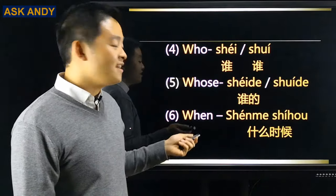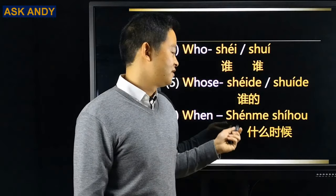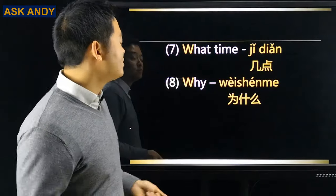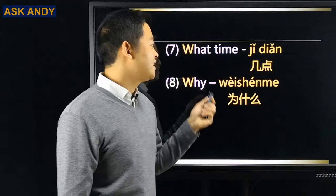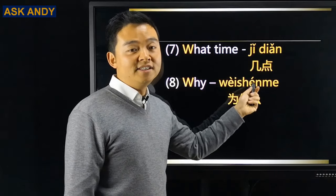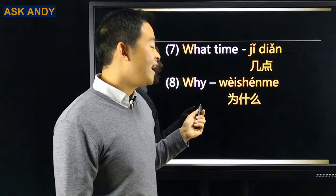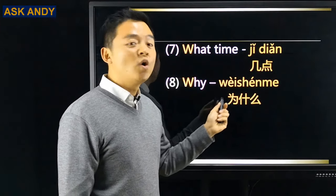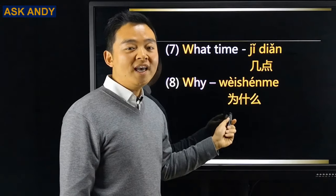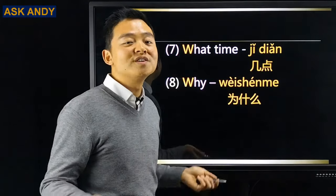Number six: when — 什么时候 (shénme shíhòu). Number seven: what time — 几点 (jǐ diǎn). Number eight: why — 为什么 (wèishénme). That's all for W-question words in Chinese.